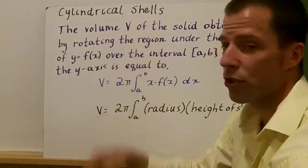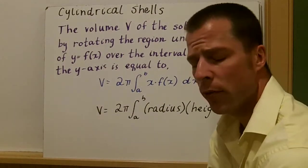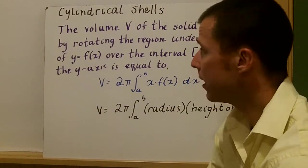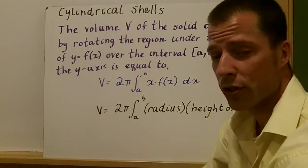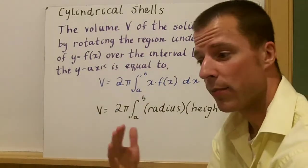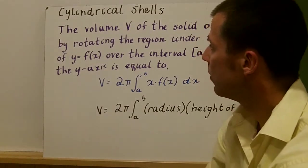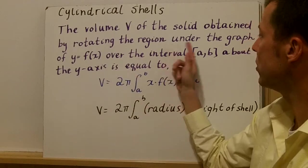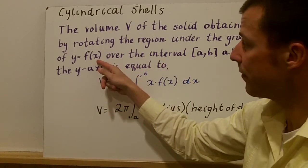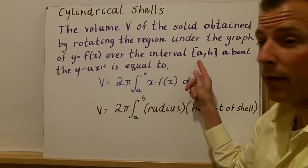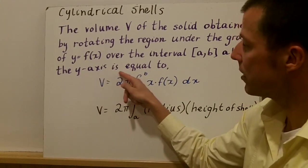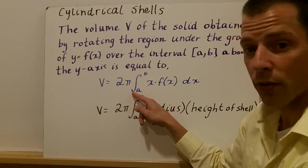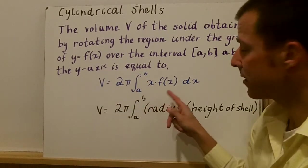All right, welcome to Cylindrical Shells. Before we talked about washers and disks and we used cross sections to take volumes of these solids. What happens with cylindrical shells is that we're going to take the volume of one complete revolution. The definition here is the volume V of this solid is obtained by rotating the region under the graph of y equals f(x) over the interval [a,b] about the y-axis. This would be equal to the volume equals 2π times integration from a to b of x times f(x) dx.